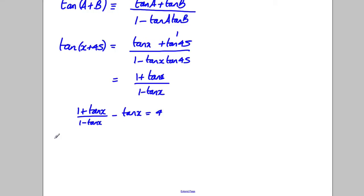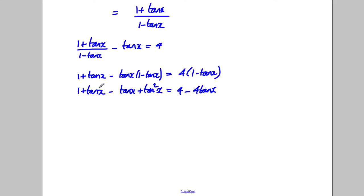Let's multiply everything by 1 subtract tan X. So 1 add tan X multiplied by 1 subtract tan X would equal 4 times 1 subtract tan X. Let's expand out: 1 add tan X subtract tan X add tan squared X is equal to 4 subtract 4 tan X.